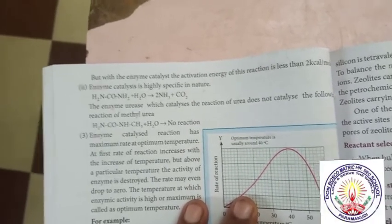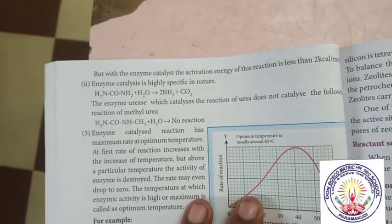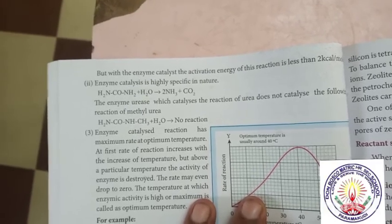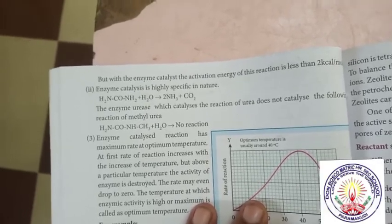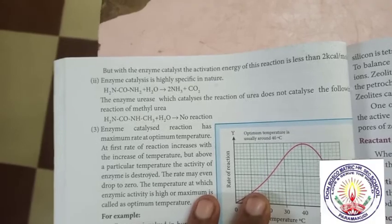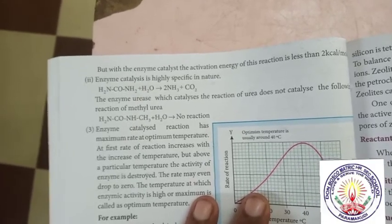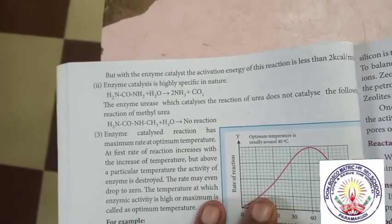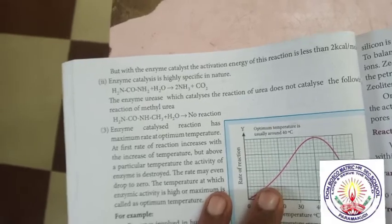For example, urea plus H2O gives ammonia plus carbon dioxide. The enzyme urease which catalyzes this reaction does not catalyze the following reaction of methyl urea.